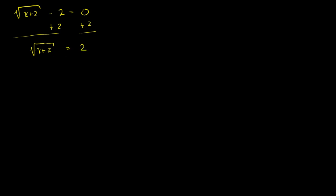And once you isolate one of the radicals, then you're ready to essentially square both sides of this. If we're dealing with a square root, we square both sides, so let's do that. So let's square both sides of that equation, and then we get the square root of x plus 2 squared is just x plus 2, is equal to 2 squared, is equal to 4.